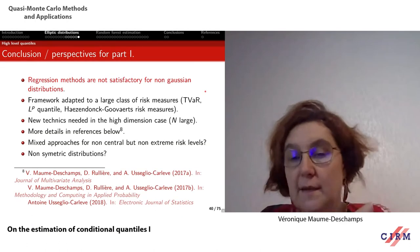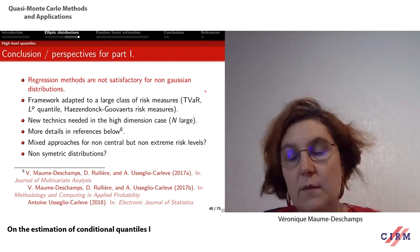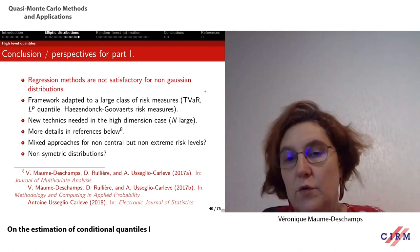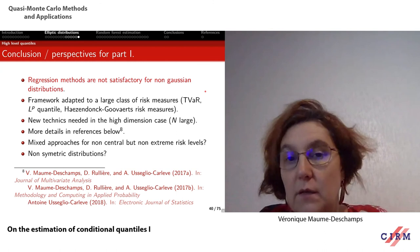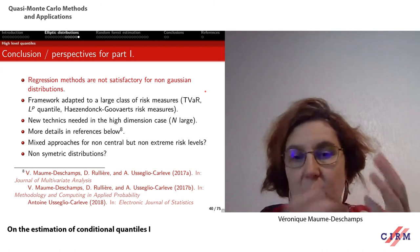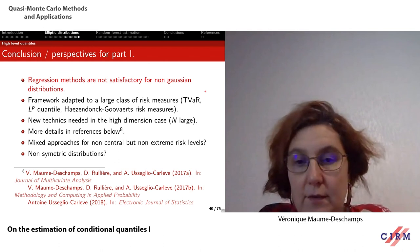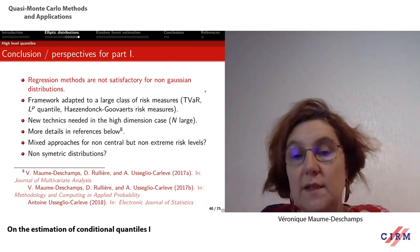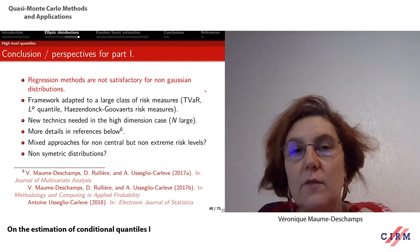To conclude this part: quantile regression is not good for non-Gaussian distributions — I have seen papers using it for conditional quantile estimation, which I think is a bad idea when far from Gaussian. What we did can be adapted for many distribution risk measures such as TVaR, Lp quantile, and others. In high dimension, other techniques are needed, as addressed in Antoine's follow-up work. Open questions include: what to do for intermediate alpha levels (neither near 0.5 nor near 1), and how to handle asymmetric distributions.